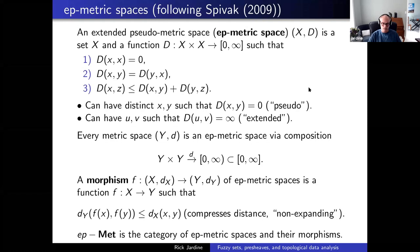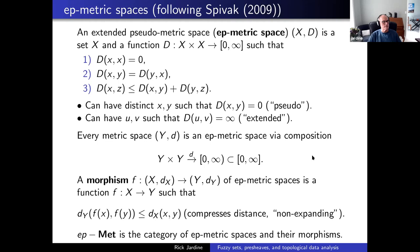Extended pseudometric spaces allow room for constructions you can't make with metric spaces. There's a category here: a morphism from one EP metric space to another is just a function which compresses distance — the distance in y from f(x) to f(y) is less than or equal to the distance in x from x to y. You can compose two of these, giving the category of extended pseudometric spaces and non-expanding functions.